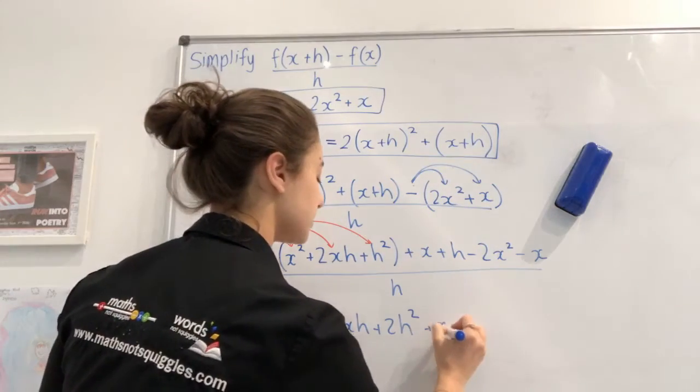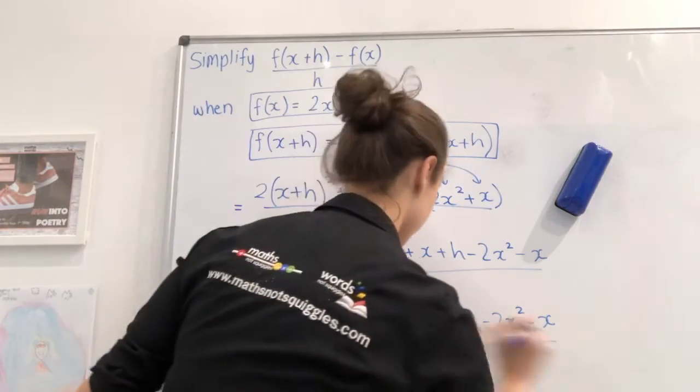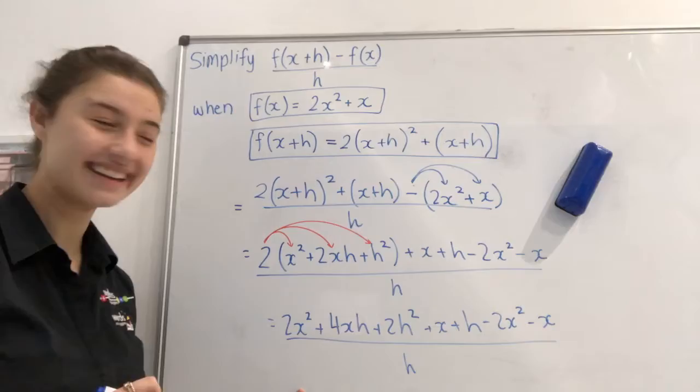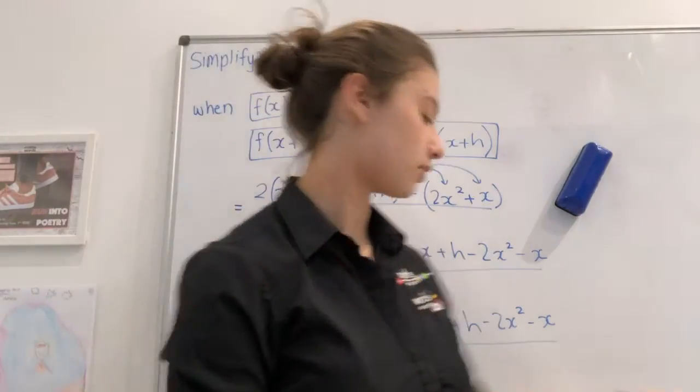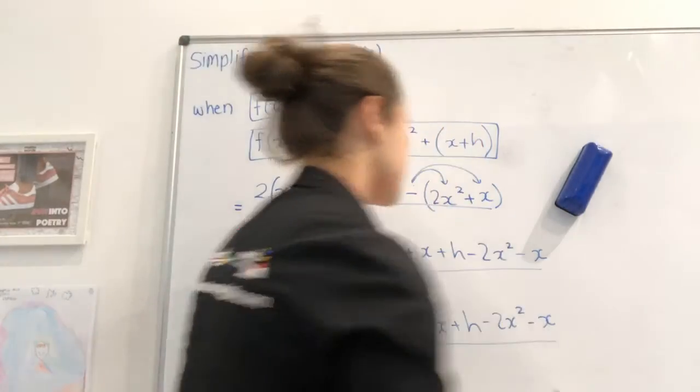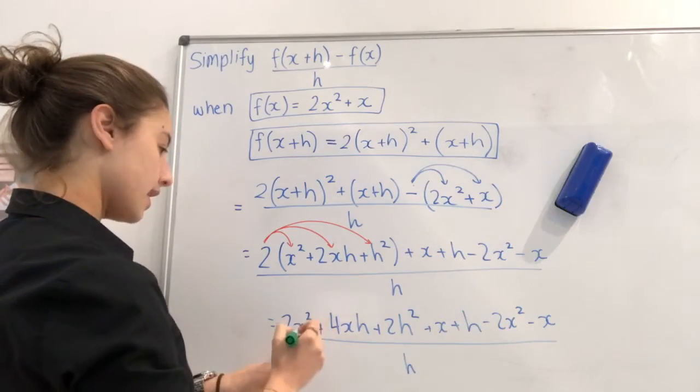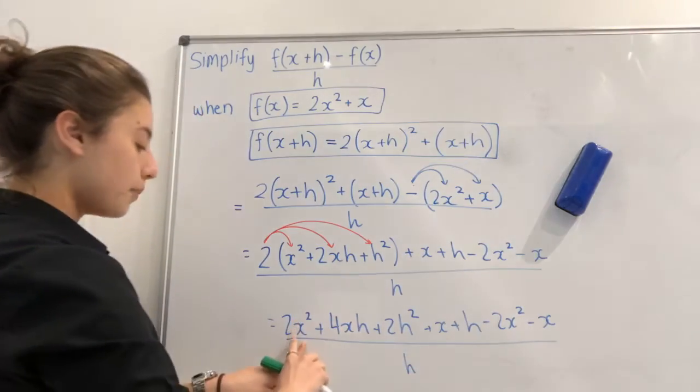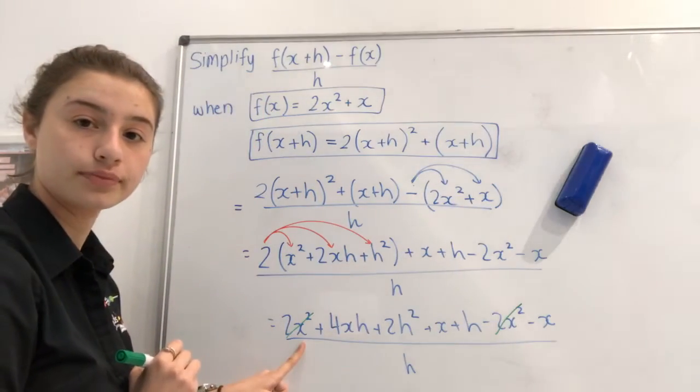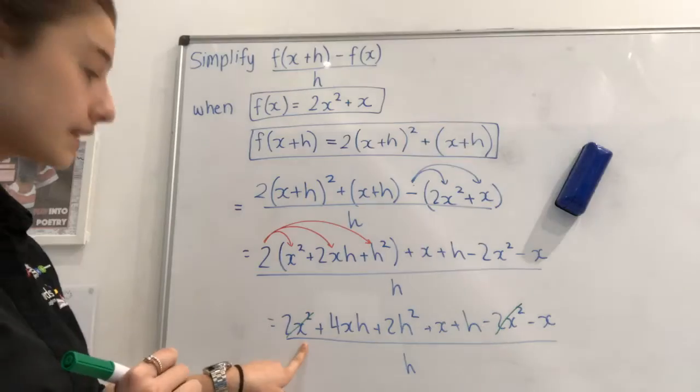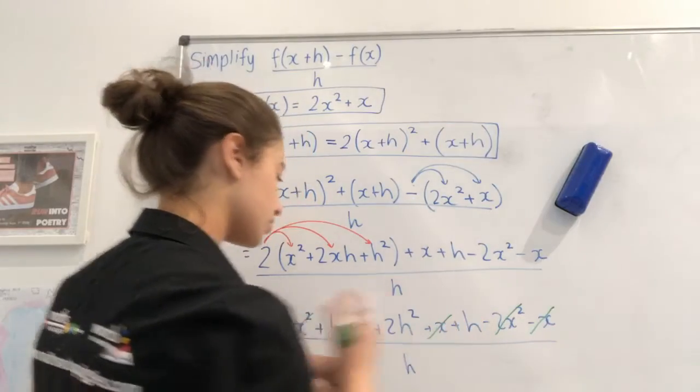And then plus x plus h minus 2x squared minus x all over h. Now, I know this is looking pretty yucky, but we're going to make it a little bit simpler now by collecting our like terms. So, like terms, they have to have the exact same collection of variables. So I've got an x squared and an x squared there. And they happen to be opposites of each other. So a positive 2x squared minus 2x squared, we know that they're going to cross off. Now, next thing that we've got to do is I've got a positive x, negative x. Let's get rid of it. Let's cross those off as well.